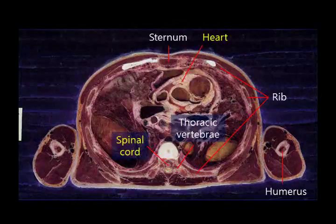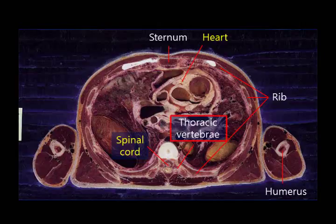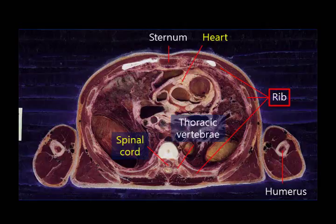From the vertebral column, the thoracic vertebrae are the ones attached to the ribs. The ribs go to the anterior side of the body and attach to the sternum. See that the heart is located behind the sternum.